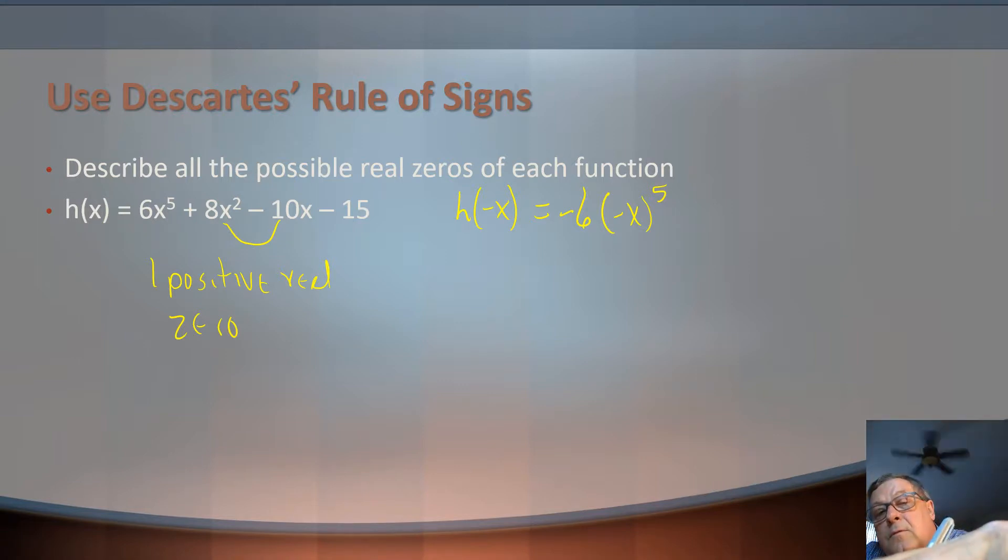When it's an even power, the sign is going to stay the same. The reason for that: negative 1 squared is positive 1. Positive 1 times 8 is still 8x squared in this case.